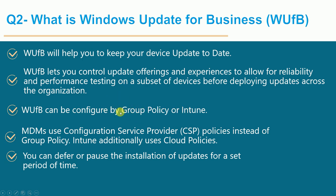Windows Update for Business can be configured by Group Policy or Intune. When using Intune, CSP (Configuration Service Provider) policies are used instead of Group Policy. Intune additionally uses cloud policies. You can defer or pause the installation of updates for a set period of time — you can pause or defer updates for certain periods as needed.